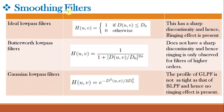We have learned in the previous video class that low pass filters or smoothing filters can be further classified into three categories: ideal low pass filters, Butterworth low pass filters, and Gaussian low pass filters. We have also studied that the basic formula for any kind of filtering is based on the convolution integral.